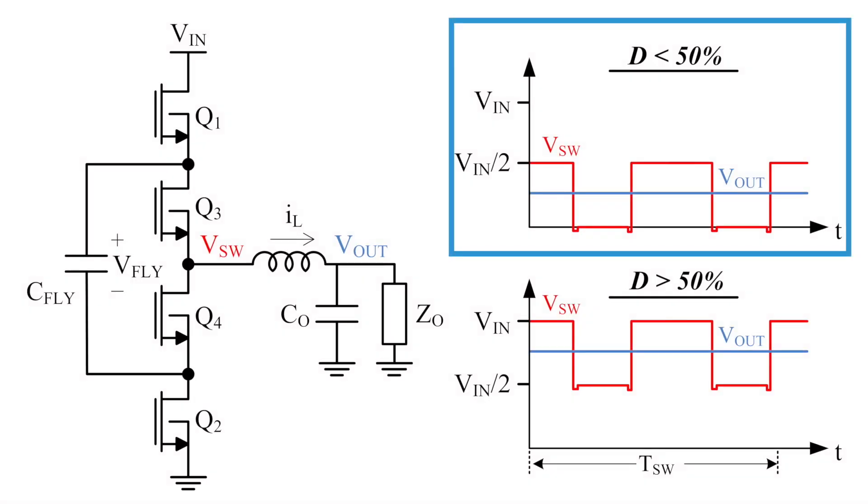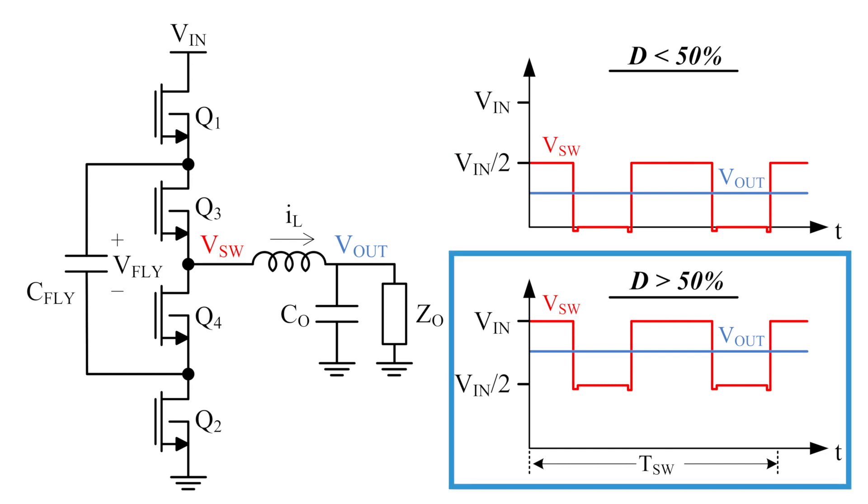When the input voltage is higher than twice the output voltage, the switch node alternates between ground and VIN over two. In comparison, when the input voltage is lower than twice the output voltage, the switch node alternates between VIN and VIN over two. Now let's look at how the switches are driven for each of these scenarios.